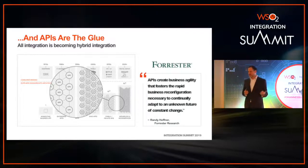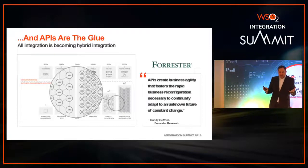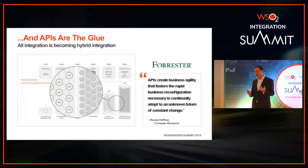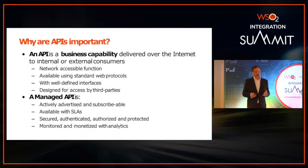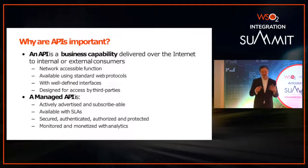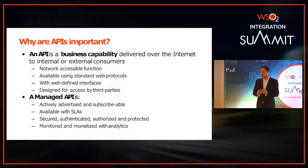We've been doing this for 15 to 20 years. I remember going to the first DCOM, CORBA, RPC-type events where we started doing network communications. But what's really changed is this realization that we need to do this in a managed way. An API is some business capability delivered over the internet, network accessible through standard interfaces, designed for use by third parties. But what's important is not just an API, but a managed API — one where you have subscription, keys, and SLAs.